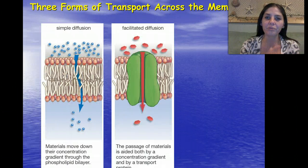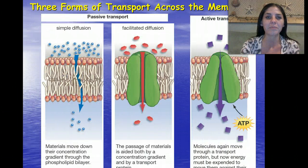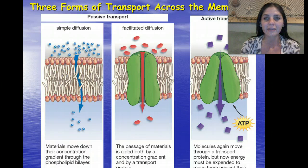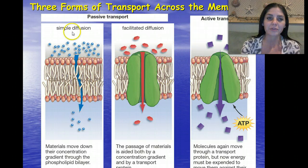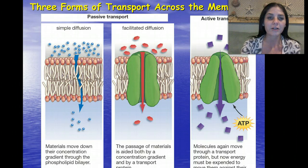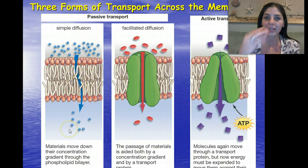There are three forms of transport across the cell membrane. The first two are passive. Remember, passive means peaceful, and it does so without energy. So passive transport does not require energy. We have two types. We have simple diffusion, which is when materials move down their concentration gradient from a higher concentration to a lower concentration, so they equal out.